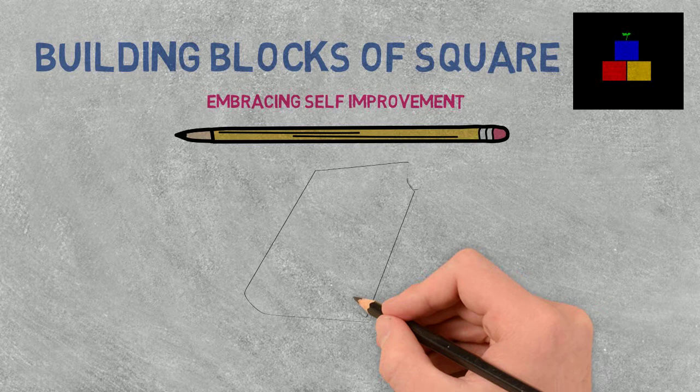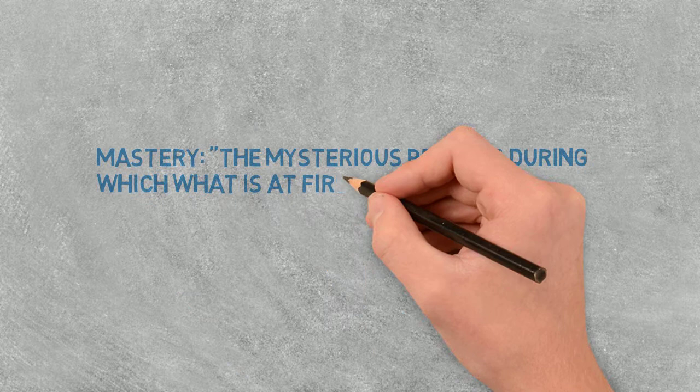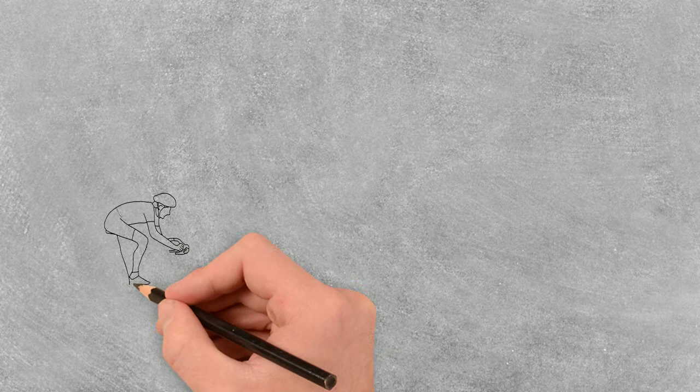Hi, I'm Square, and today I'm going to see how we can both improve by reading the book Mastery by George Leonard. First, what is mastery? The mysterious process during which what is at first difficult becomes progressively easier and more pleasurable through practice.